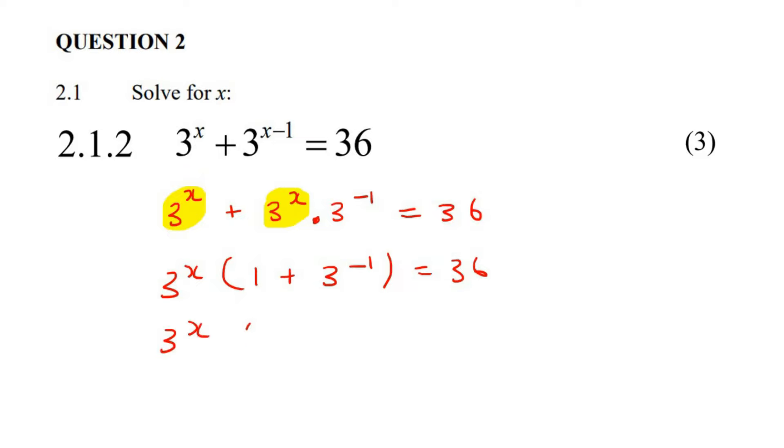Now this part in the bracket, you can just go ahead and type it on the calculator, it's going to be 4 over 3. And now we can divide, so we can say 36 divided by 4 over 3, because we're taking this to the right-hand side. And so if you go type that on the calculator, it'll be 27.